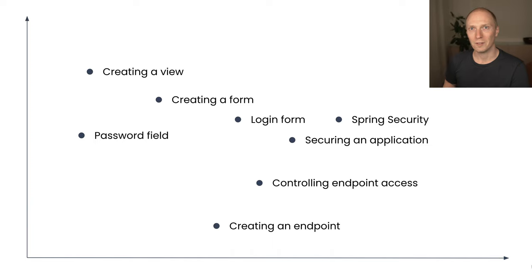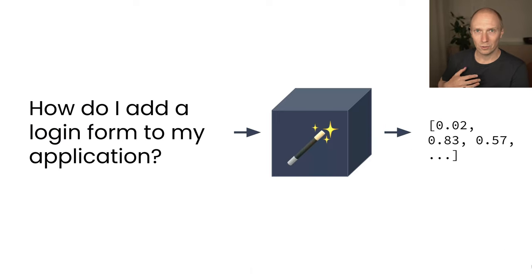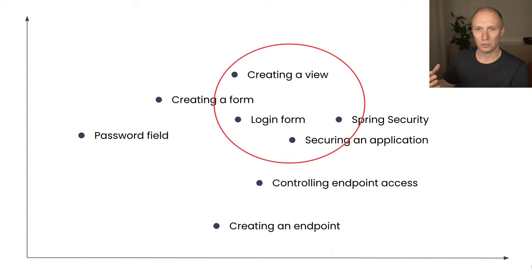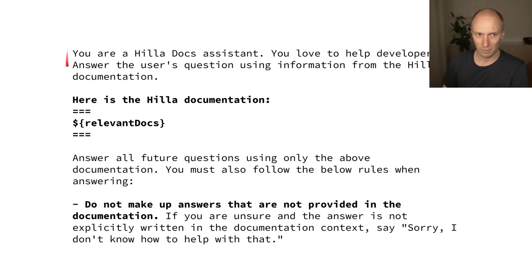I'm not great at drawing in 1,500 dimensions, so I'll illustrate this in two dimensions instead. We go through our documentation, take small sections of it, encode all of these into vectors, and place them in a two-dimensional space. When a user asks a question, we run the same embedding algorithm on that question to get a new vector, then search our database for the most closely related pieces of documentation to that query — and those are great candidates to include in the prompt.